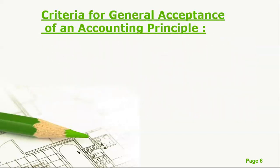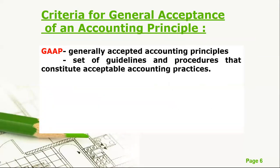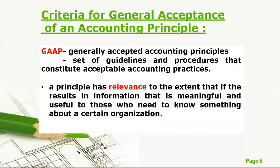The next topic is the criteria for Generally Accepted Accounting Principles, or GAAP. GAAP is a set of guidelines and procedures that constitute acceptable accounting practices, based on experience by standard-making bodies. The first criterion is relevance — to the extent that it results in information that is meaningful and useful to those who need to know something about a certain organization. Relevance is connected with timeliness, so information must be timely to be meaningful and useful to decision makers.